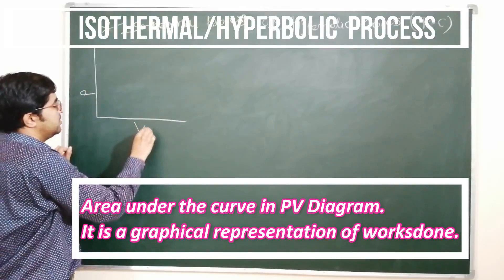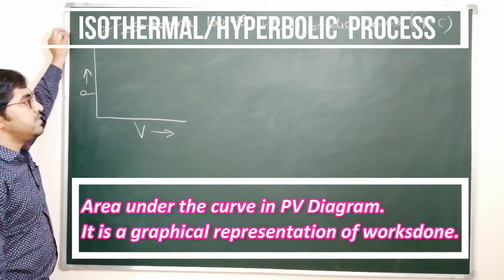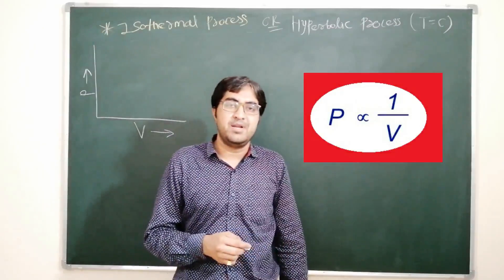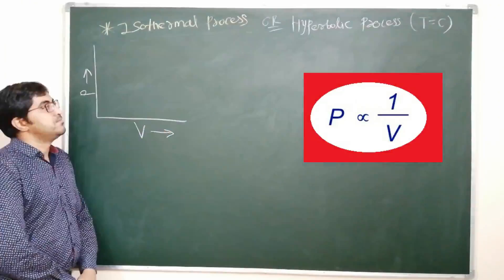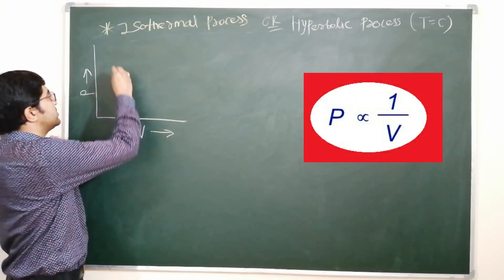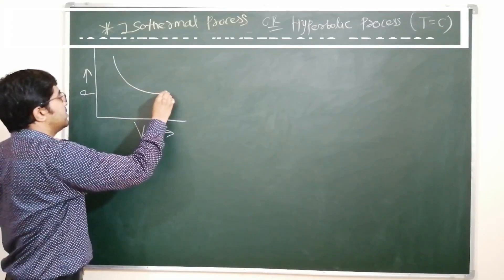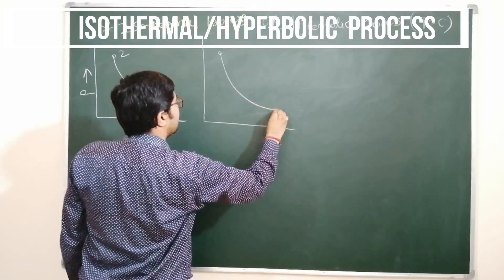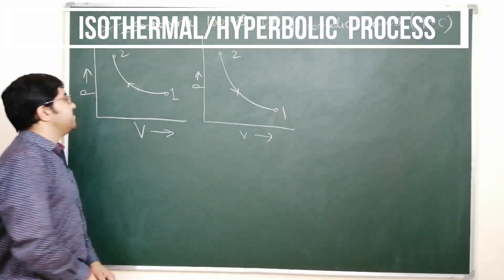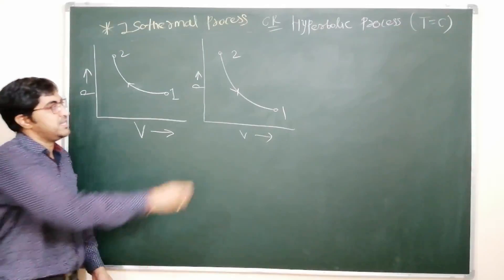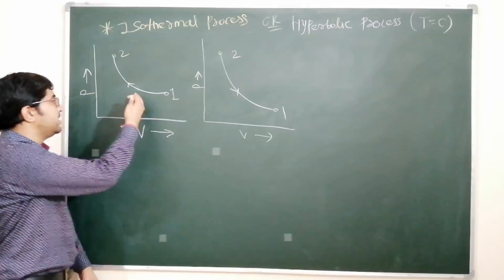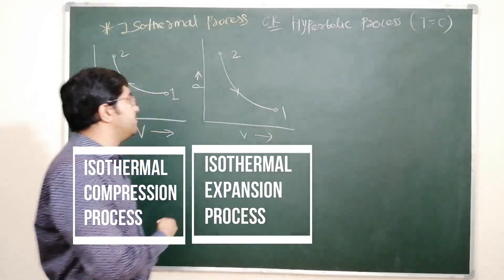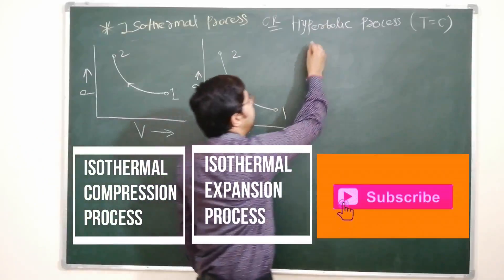Our first step is representation on the PV diagram — this is the pressure versus volume diagram. We have already discussed in Boyle's law that at constant temperature, pressure is inversely proportional to volume. So the representation of a constant temperature process on the PV diagram is a hyperbola, which is why it is called the hyperbolic process. The curve from point 1 to 2 can represent either isothermal expansion or isothermal compression.